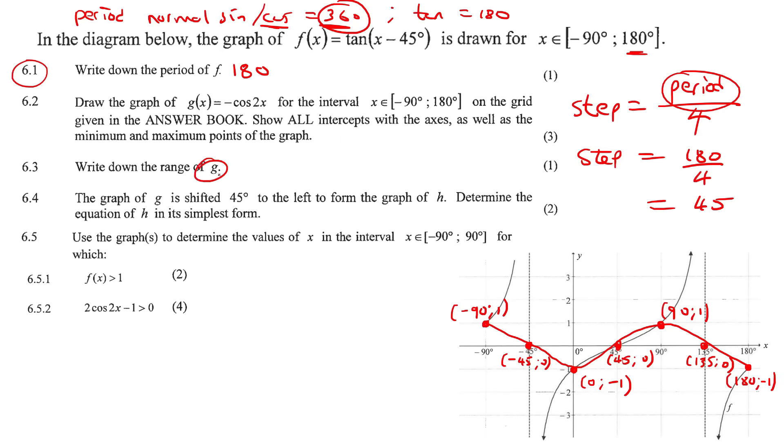Now it says write down the range of g. Now g is the one that we've just drawn. The range is the y values. So we could say y is an element that goes... The lowest y value is minus 1. And the highest y value is 1. Square brackets because the graph actually touches minus 1 and 1.